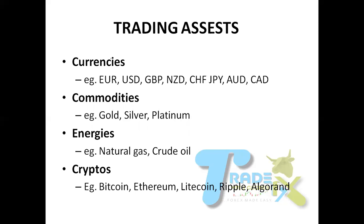We don't only trade currencies. We also trade commodities such as gold, silver, and platinum — there are many commodities. Under energies, we have natural gas and crude oil. There are other sources of energy being traded as well. These are all traded assets.